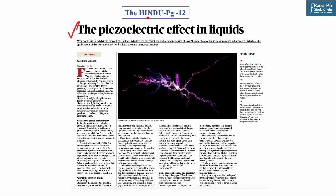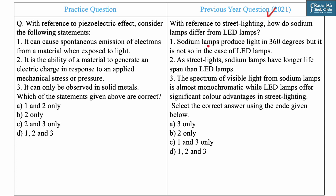The next question is based on a news article about findings related to the piezoelectric effect. Important developments in science and technology are a recurring theme in UPSC preliminary examination — for example, in 2021 UPSC asked a question based on features of LED lamps. In today's MCQ on the piezoelectric effect, statement one says it can cause spontaneous emission of electrons from a material when exposed to light — this is incorrect, as that describes the photoelectric effect.